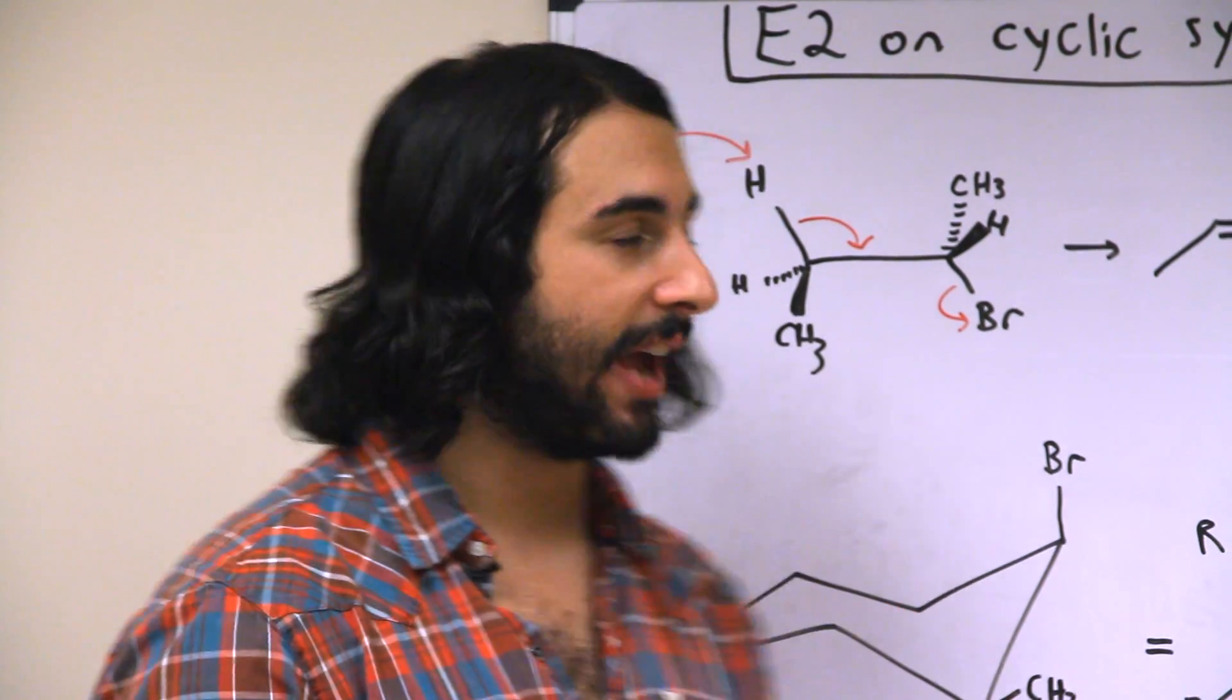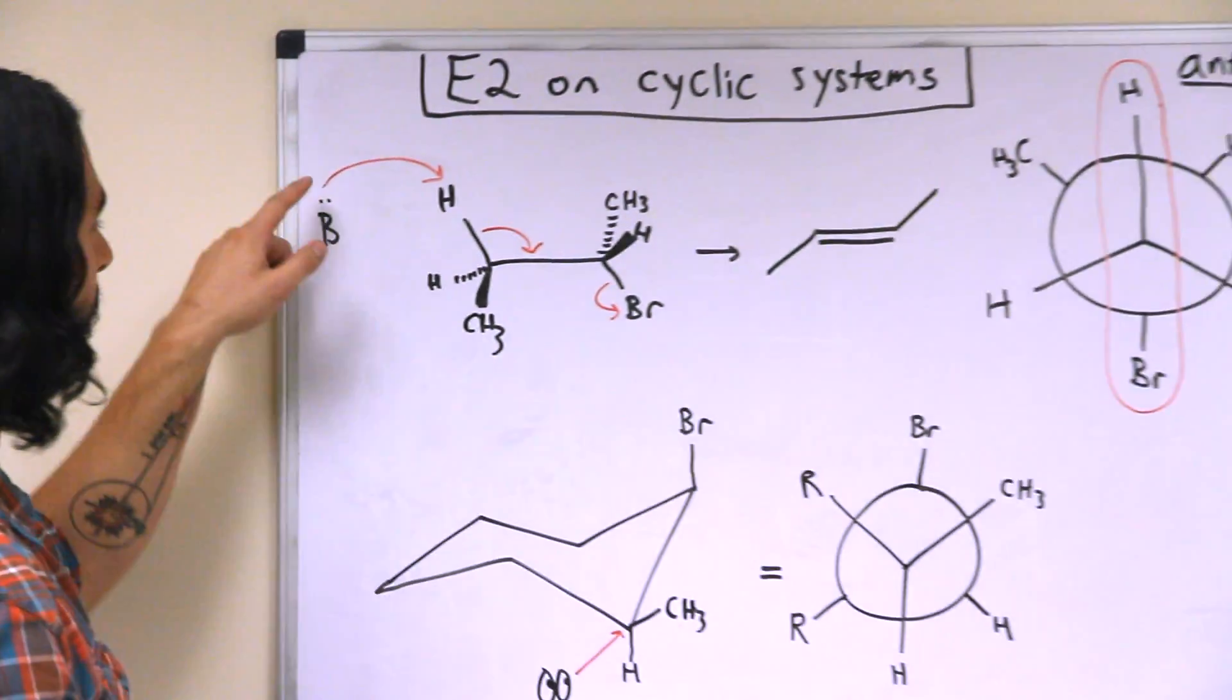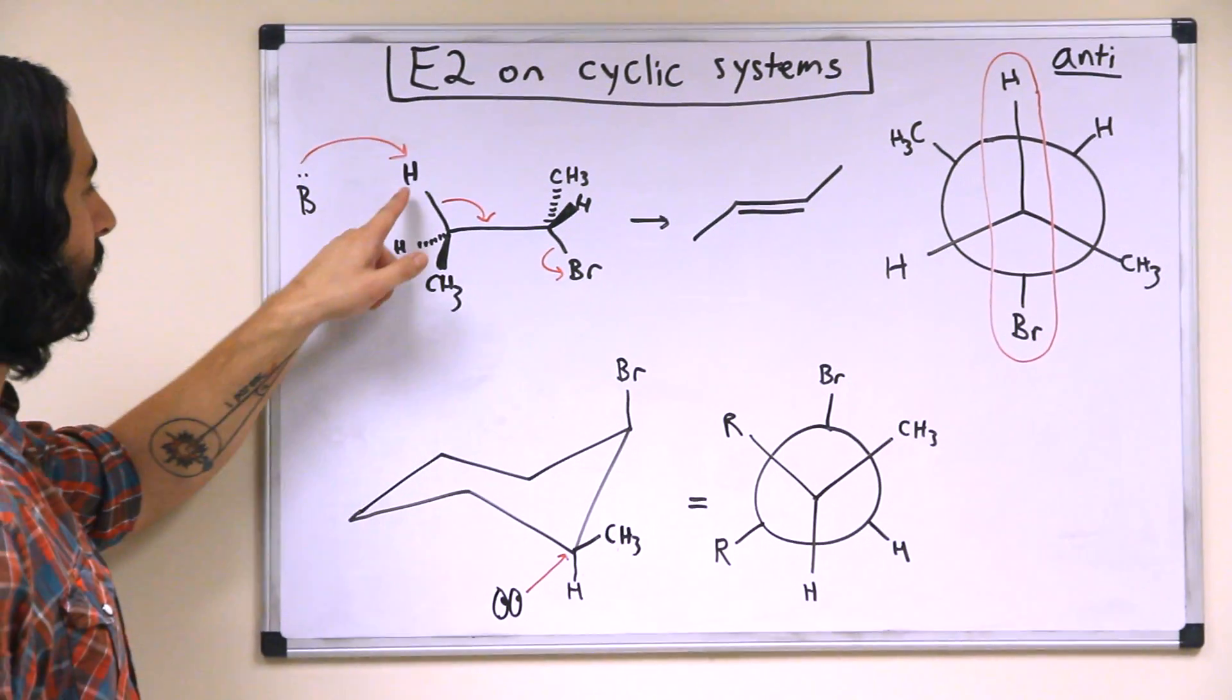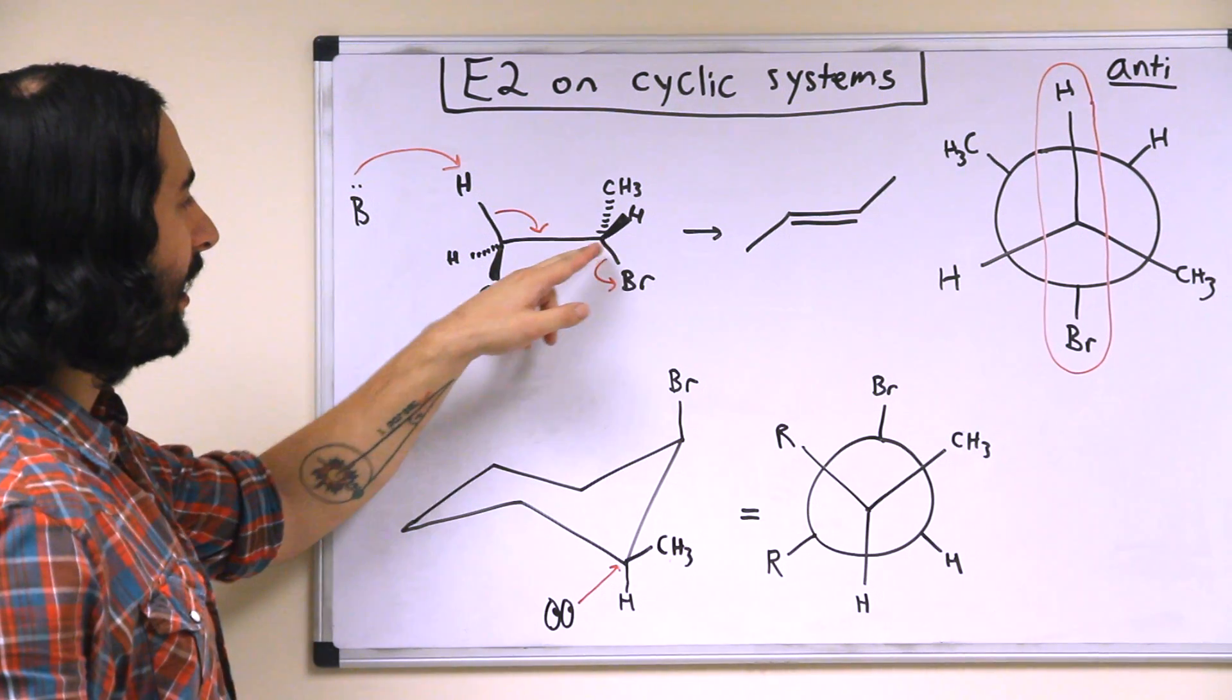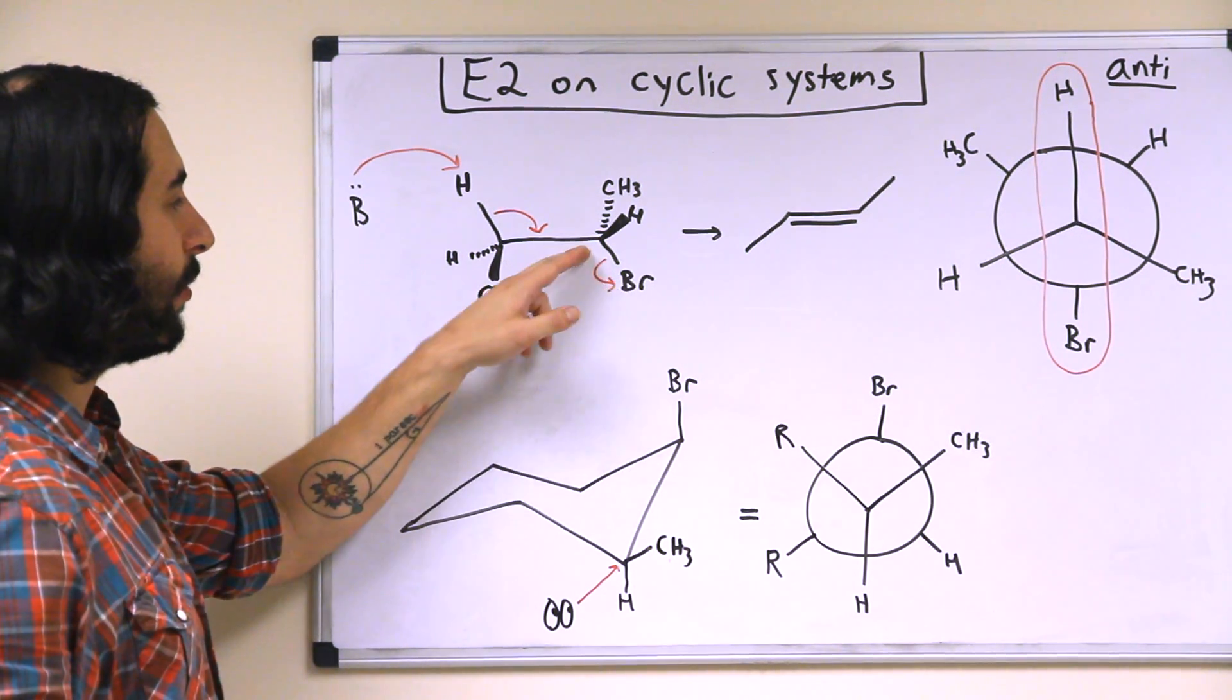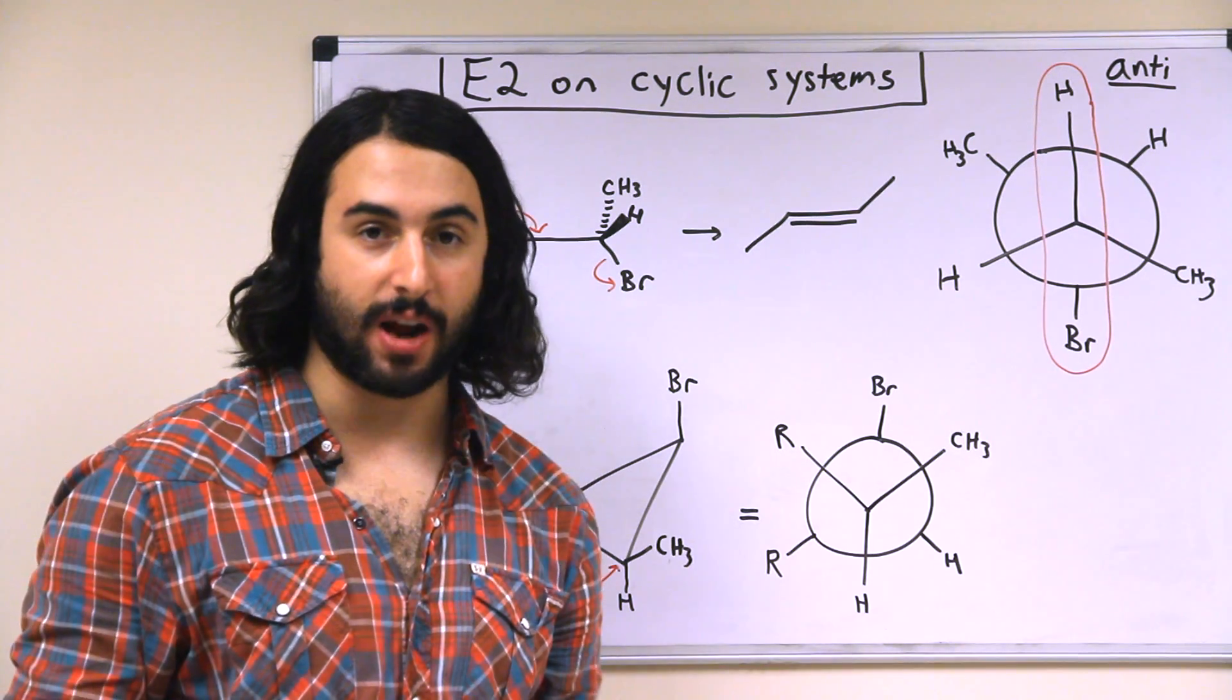So let's revisit the E2 reaction. Recall a few things about this mechanism. The base is going to extract the proton, the electrons in the carbon-hydrogen bond will form the pi bond, and the electrons between the carbon and the bromine will leave with the bromine, and there's our alkene product.